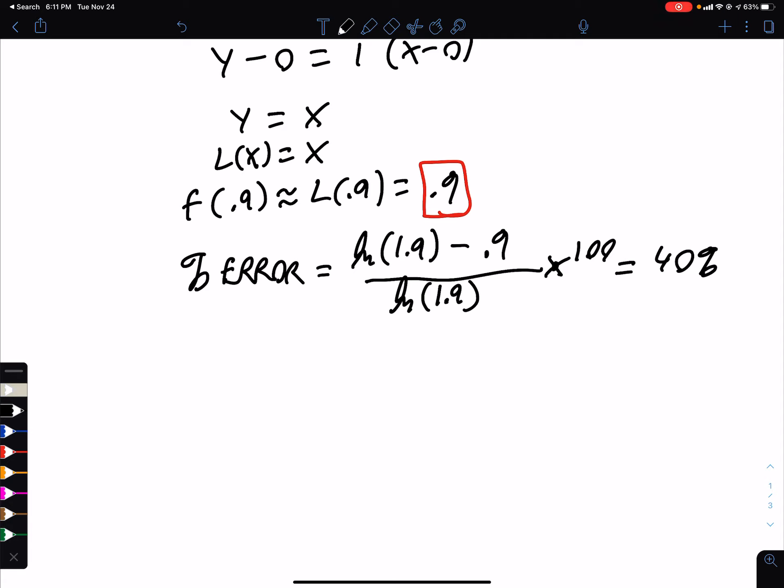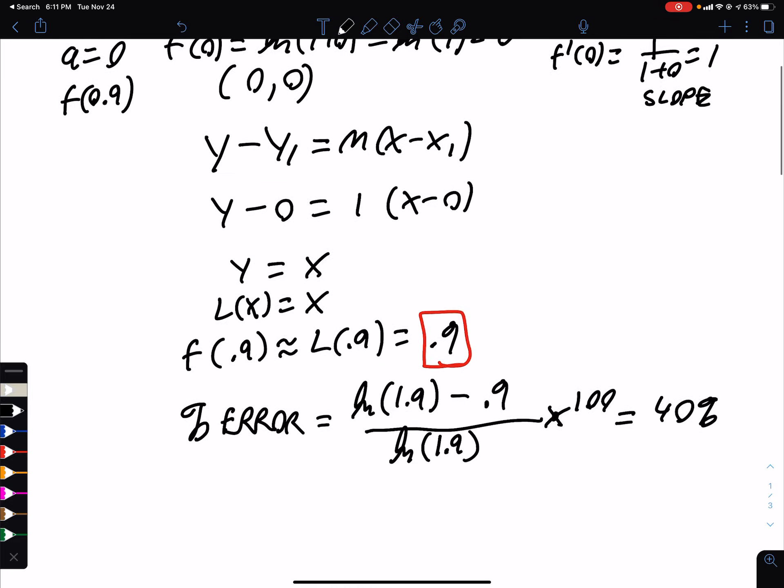Now, let me double check on my calculator here, and see if that's correct. So we've got ln of 1.9, minus 0.9, divided by ln of 1.9. Yep, so it's about 40%, 40.2%. So that's the percent error. And that is question number 15.